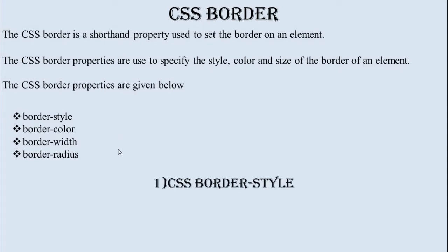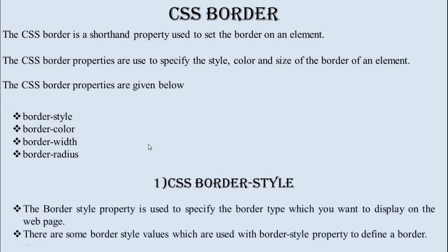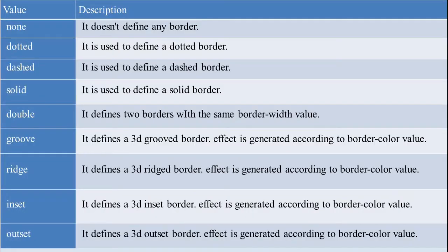First, CSS border-style. The border-style property is used to specify the border type you want to display on the webpage. There are different types of borders you can apply using border-style: dotted, dashed, solid, double, groove, ridge, inset, outset, and hidden.